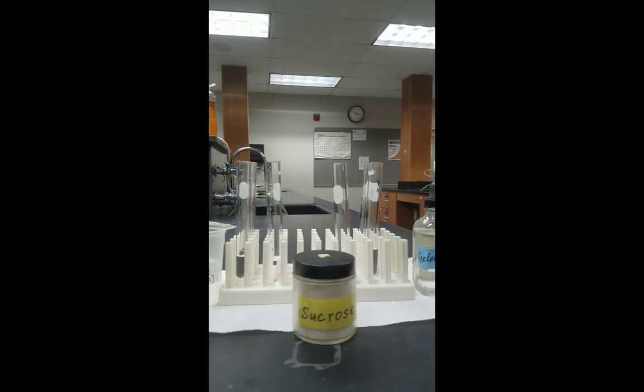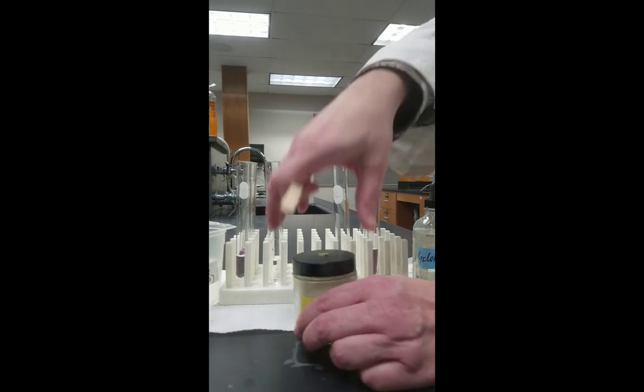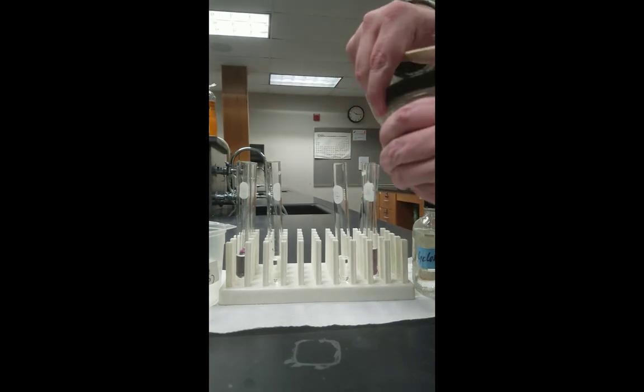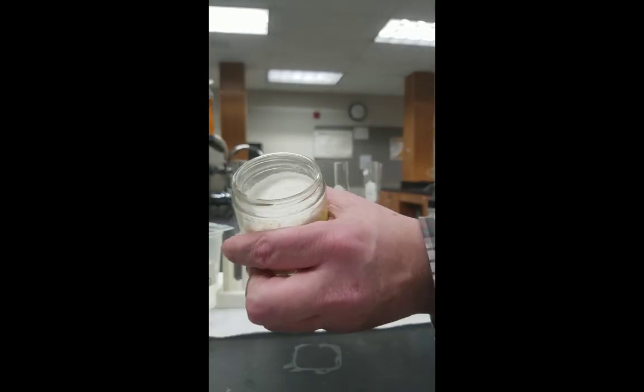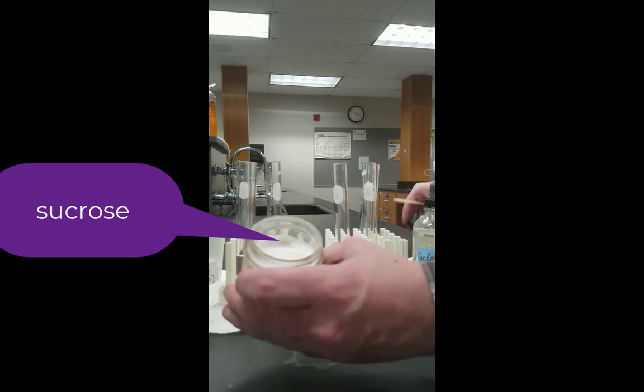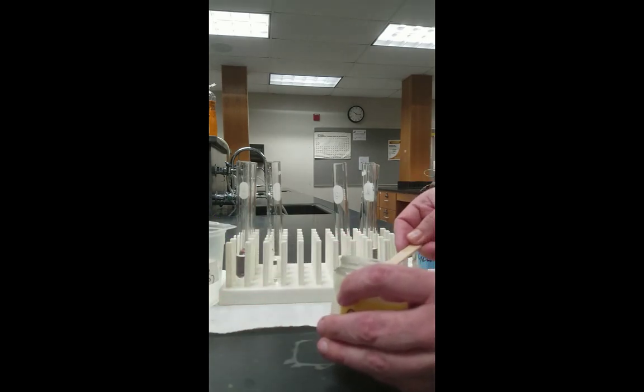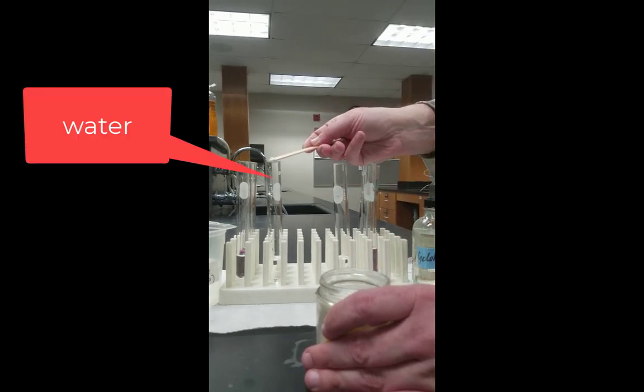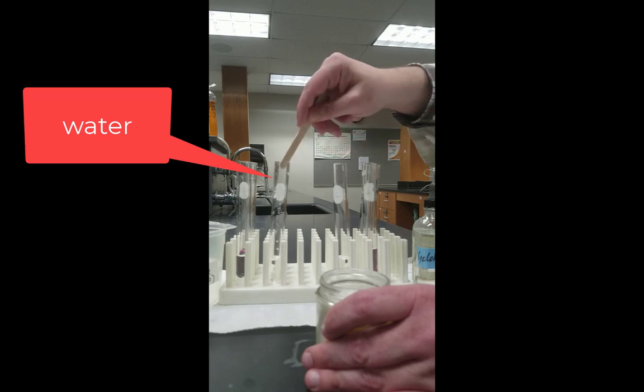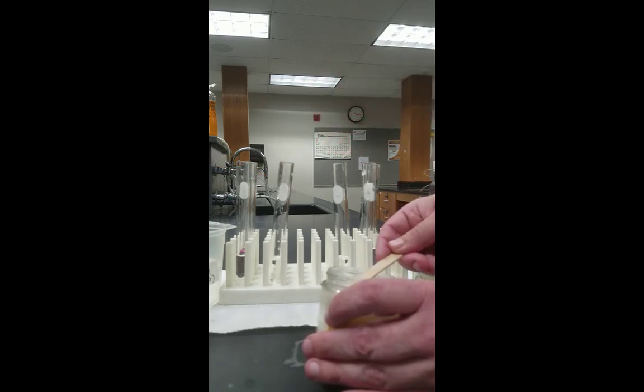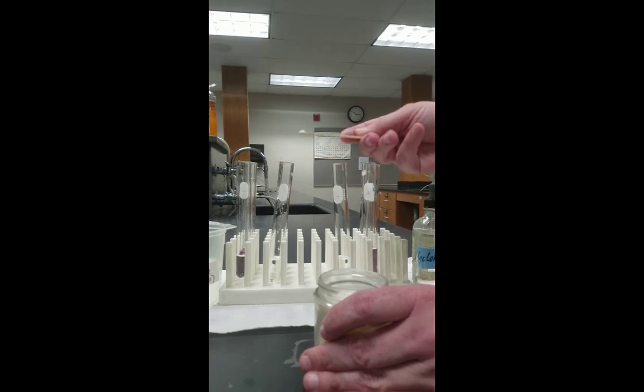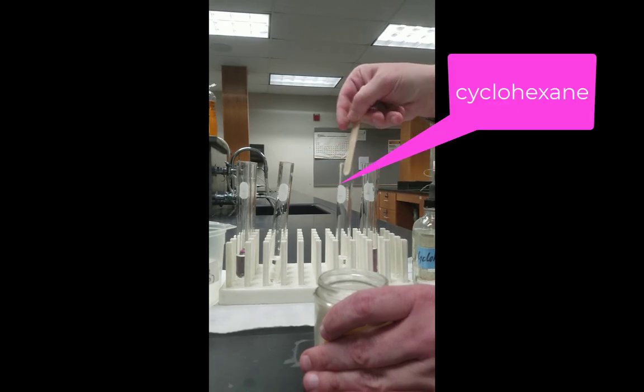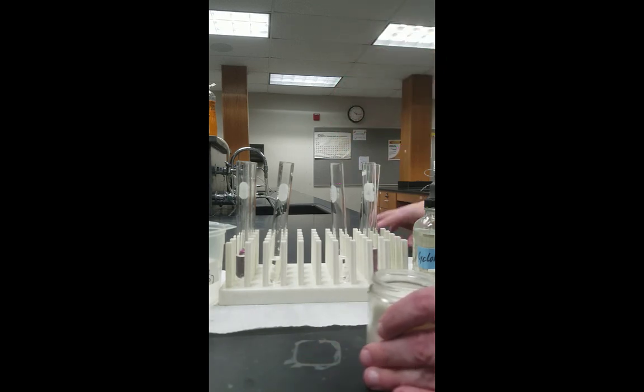Now we move to sucrose. Again, that's table sugar. I'm assuming you have all seen table sugar, so it shouldn't be too much of a surprise to you to see that it is a white solid. Now this one will be just a little bit more difficult to visualize because white solids tend to give colorless solutions. So what we're going to have to look for here is whether or not the solid remains dissolved or if it just goes to the bottom of the test tube in the salt.